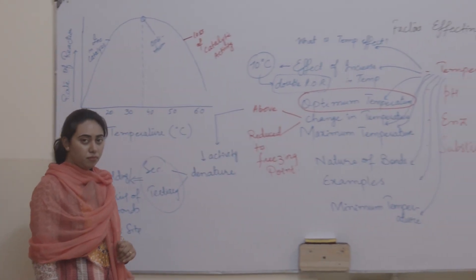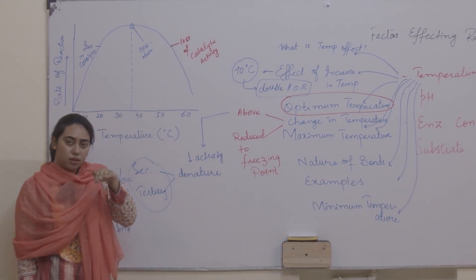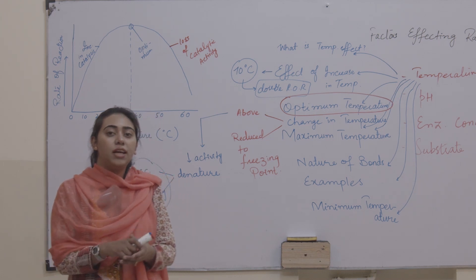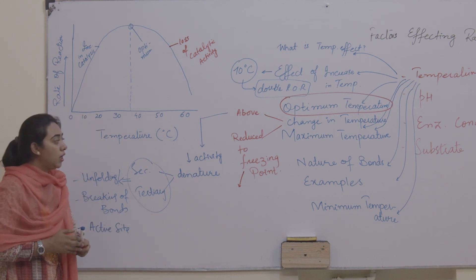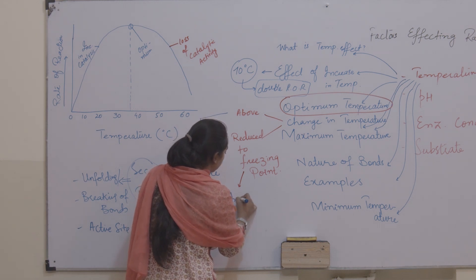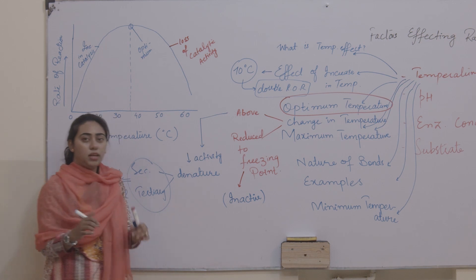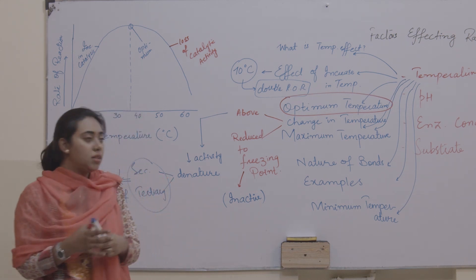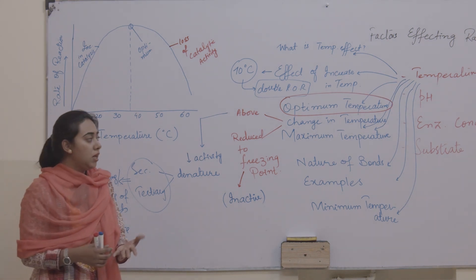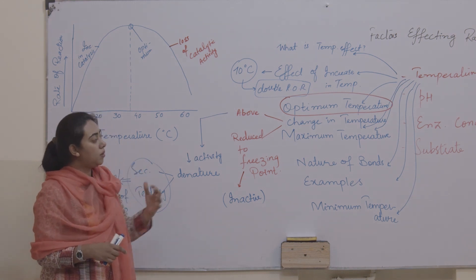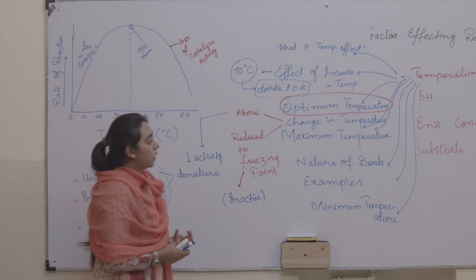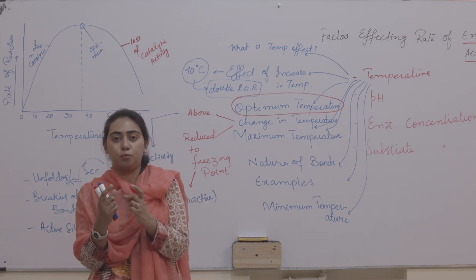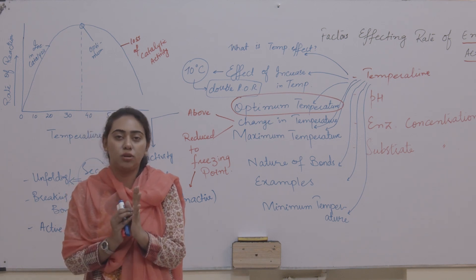If we reduce the temperature down to freezing point, the enzyme will not get denatured, but the enzyme will become inactive. The enzyme's structure remains intact, but there is no working — it goes into a dormant state. It is not working, but not denatured — nothing happened to the structure. Now, maximum temperature: the temperature range is different for every enzyme because the optimum is different for every enzyme. Maximum temperature means the temperature point at which the enzyme gets denatured — that is known as the maximum temperature.